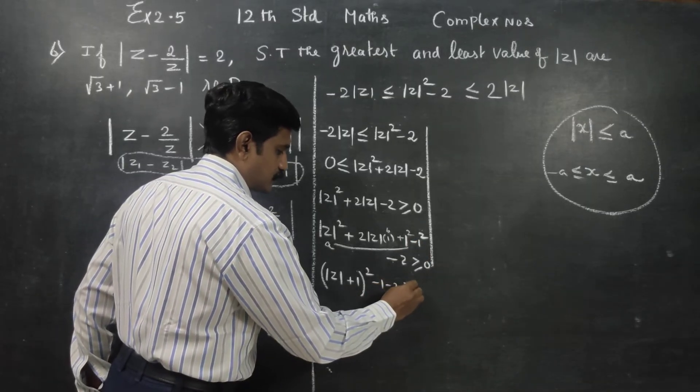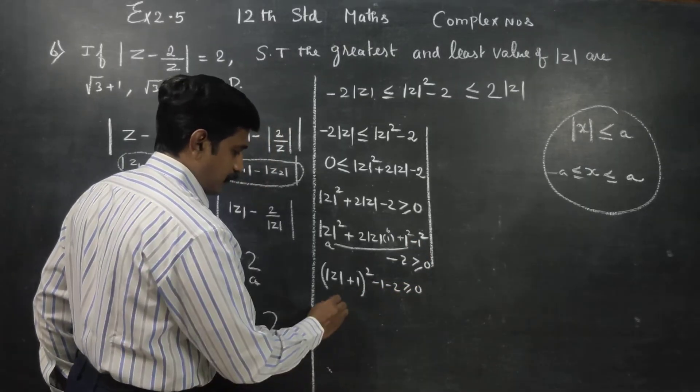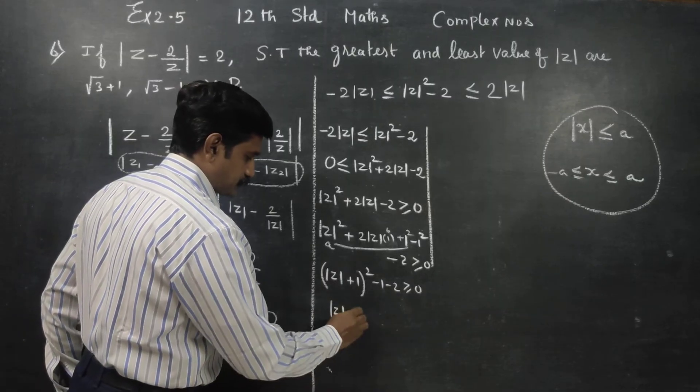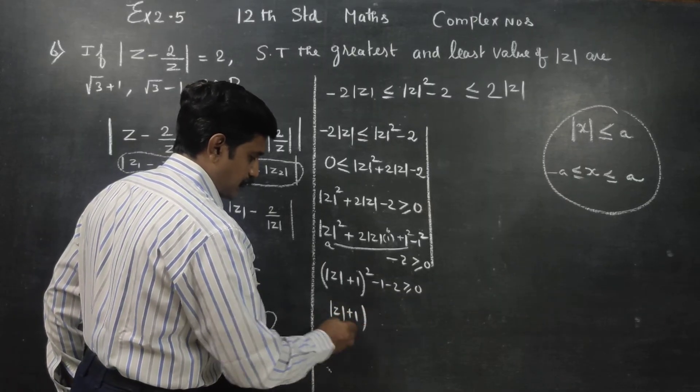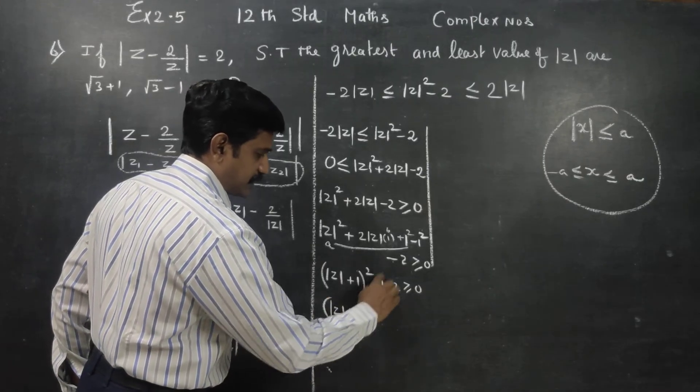It is minus 2. Using completing the square: modulus of z plus 1 whole square minus 3 is greater than or equal to 0. Therefore modulus of z plus 1 whole square is greater than or equal to 3.